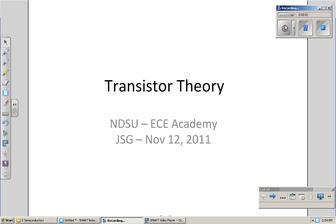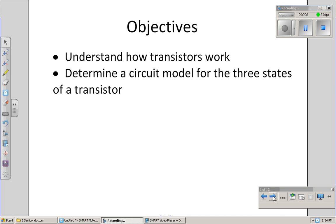Transistor theory. What we've seen so far is a diode. A diode is a two-terminal device, a PN junction. A transistor is a three-terminal device. It could be either PNP or NPN. The objective here is to understand how a transistor works and determine a circuit model for the three states of a transistor.